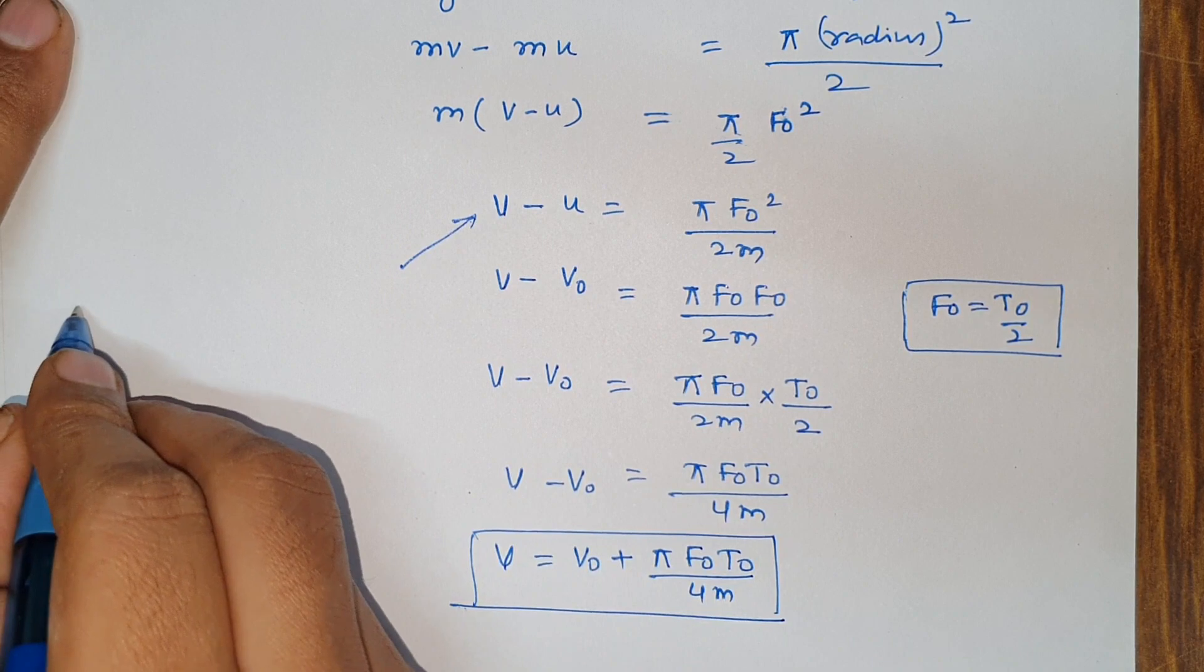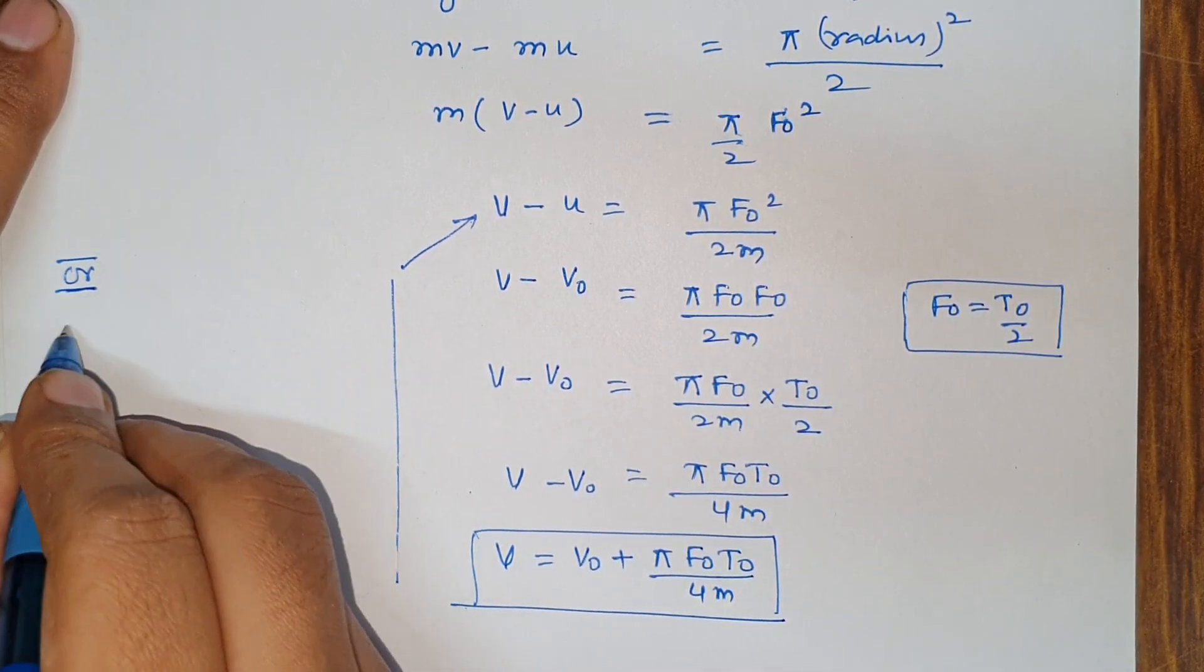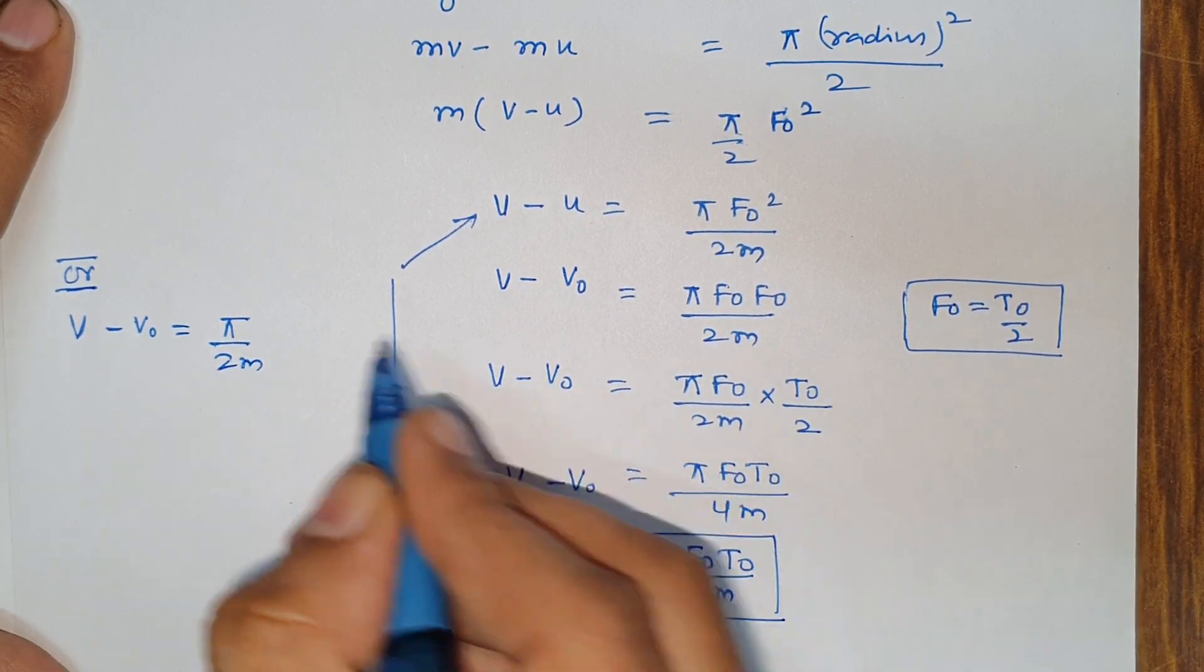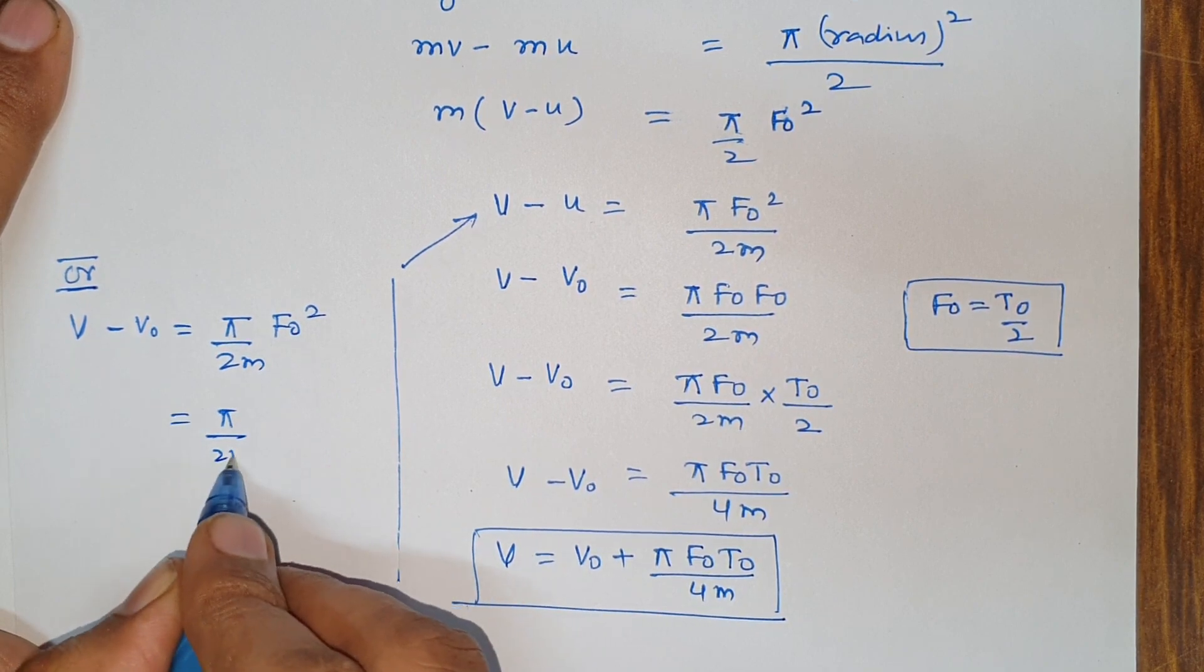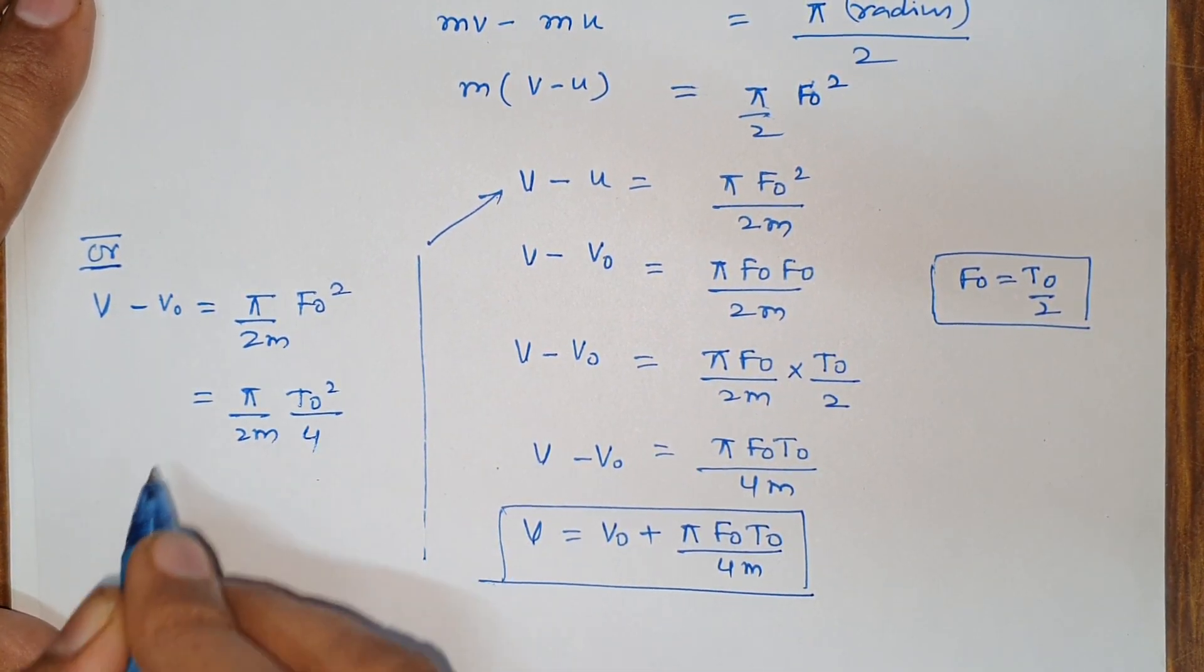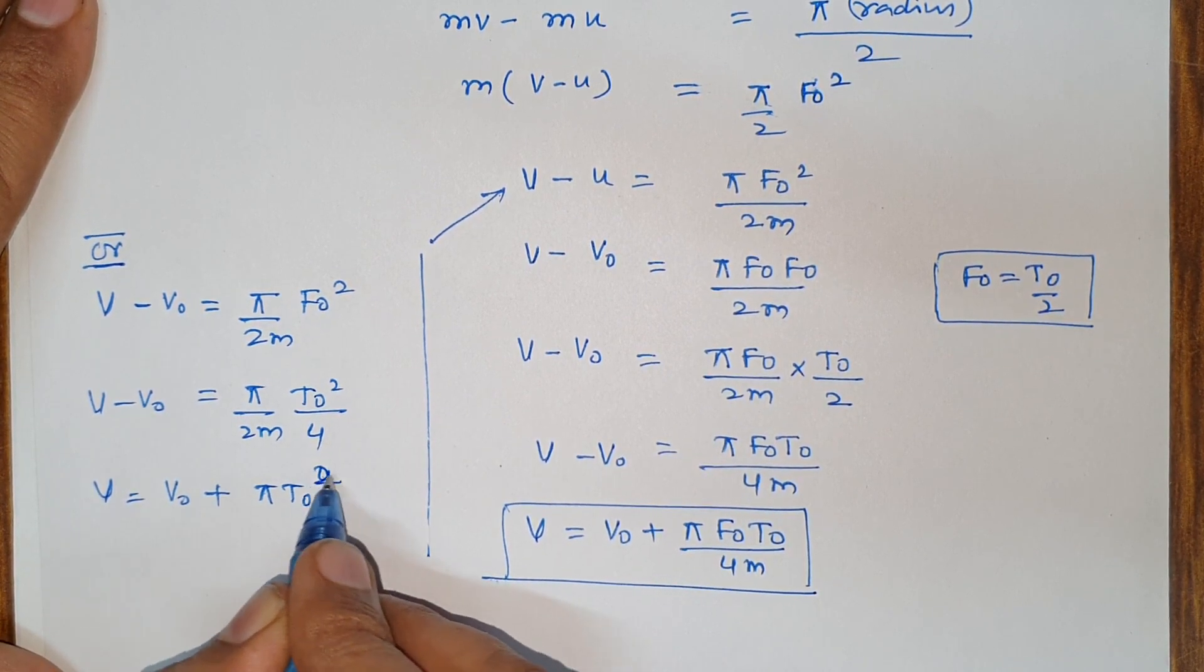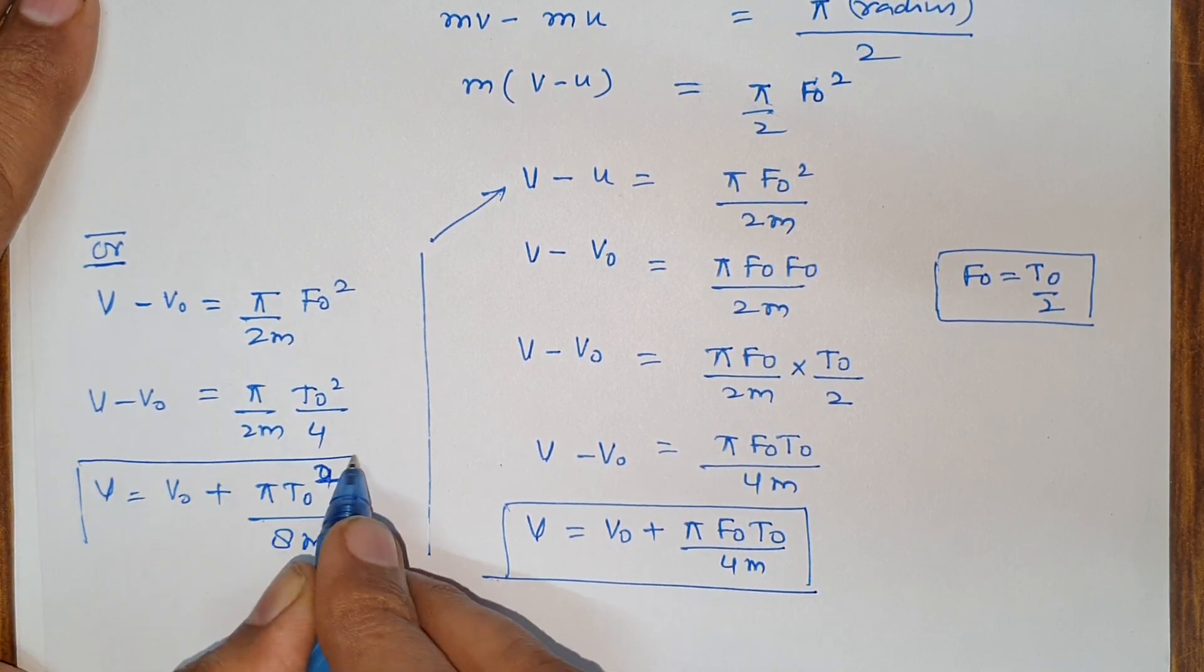If we put the full value of f0, v minus v0 is equal to pi upon 2m and f0 value f0 square, that means pi by 2m and f0 value t0 square by 4. This is v minus v0, v equals v0 plus pi t0 square by 8.